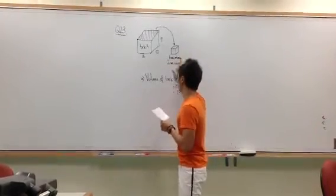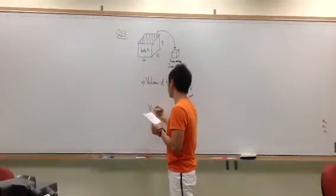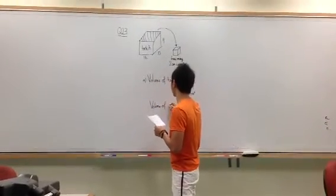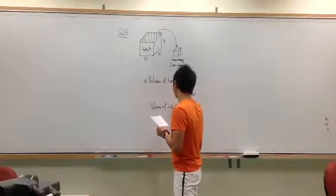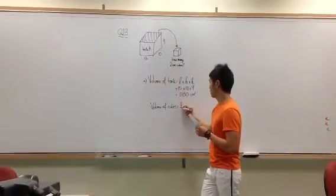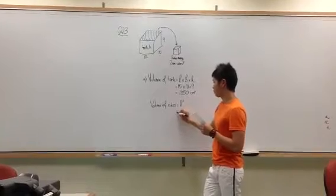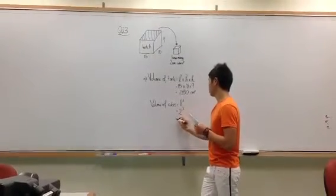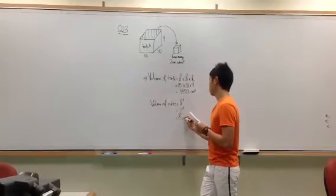Okay, similarly, for the small cubes, to find the amount of water that you can contain, you must have to put it in a volume. For cubes, it is simply length cubed because all the sizes are the same. So you take 2 cubed, which will give you 8 cubic centimeter.